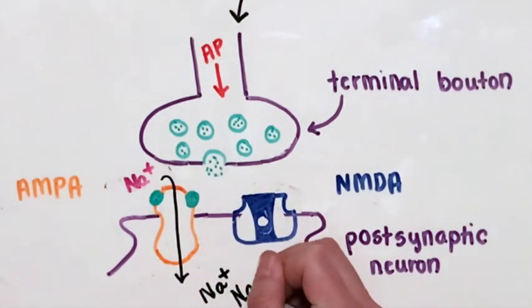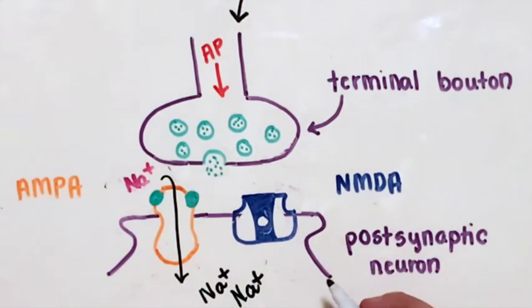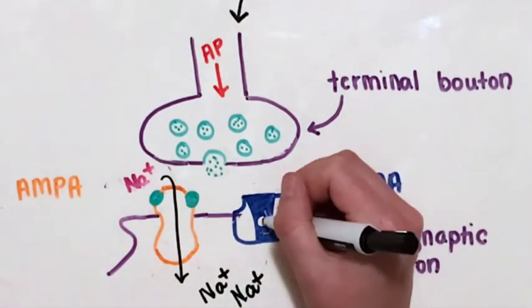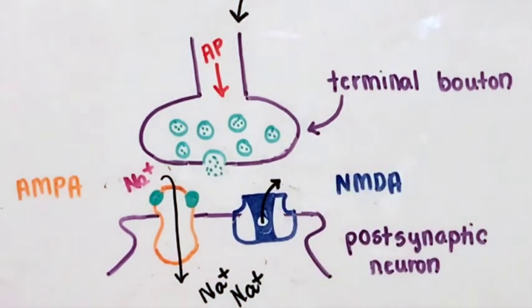As more and more sodium floods in, the positive buildup of sodium ions causes the magnesium quark to pop out of the NMDA receptor.